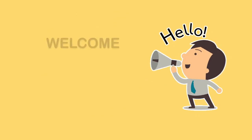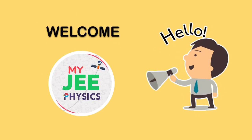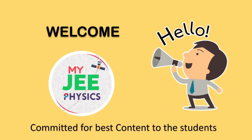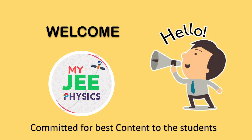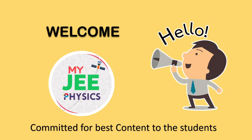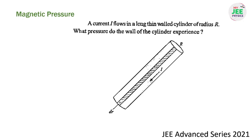Hello everyone, welcome back to MyJI Physics channel. In this channel I am very much committed to providing best content to students. This is a very nice question in electromagnetism about the magnetic field due to current-carrying conductors, and due to this magnetic field, a thin-walled cylinder will experience a magnetic pressure. This is a very good concept and can appear in the final exam also.